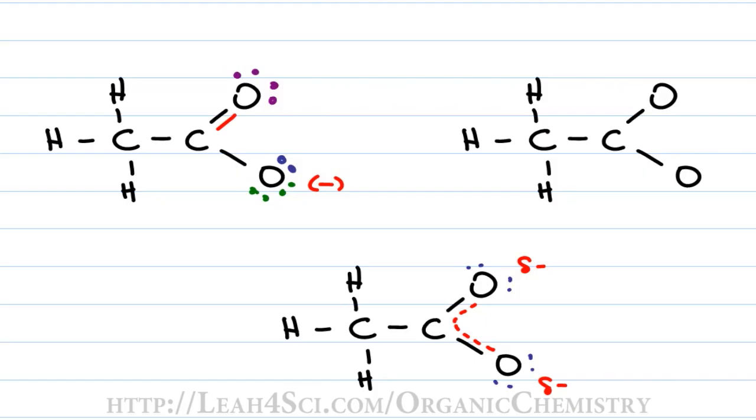When you draw your resonance arrow, the arrow is simply the path that the electrons take and so you have to start your arrow at the electrons and end the arrow exactly where it's going. If these electrons are forming a bond, you want to end the arrow between the two atoms where the bond is forming.